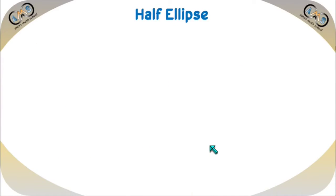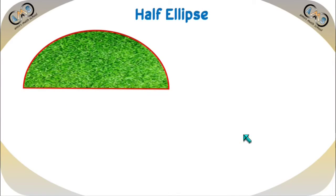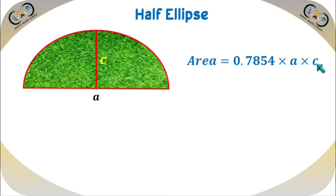Now let's see the area of a half ellipse. For a half ellipse type shape, this length is A and this length is C, where C is the highest perpendicular value for that curve. So the formula will be 0.7854 times A times C. Since C is the half dimension, the formula is completely similar to the previous one — 0.7854 times A times C. If we take the total value and divide it by 2, we will get the half ellipse area.